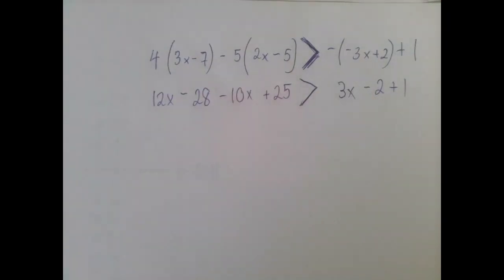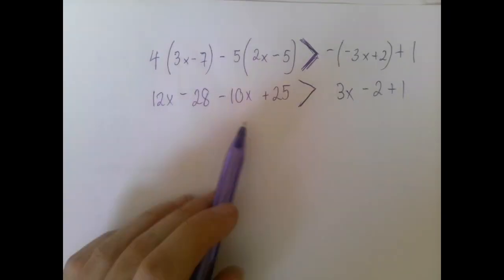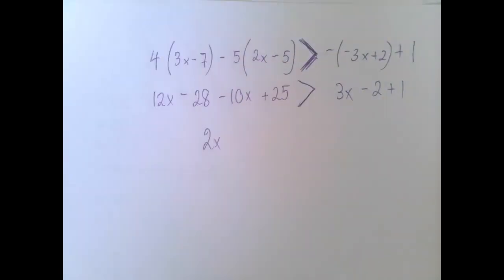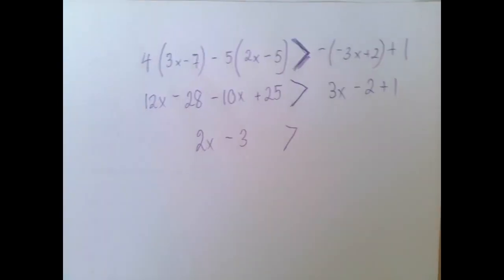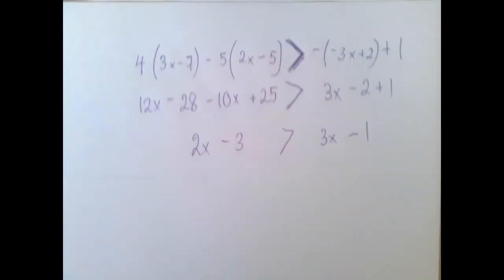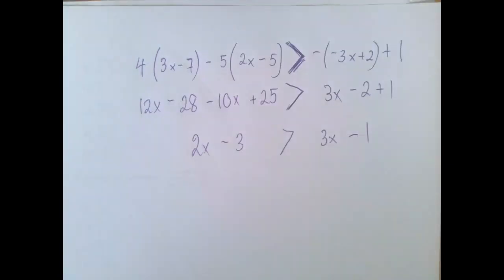So now let's combine like terms. On the left-hand side, we have 12x minus 10x. That's 2x. And negative 28 plus 25 is negative 3. And on the right-hand side is 3x minus 1.